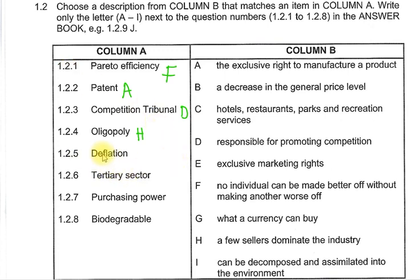Deflation, 1.2.5, is the opposite of inflation. Deflation — the correct answer is B — a decrease in the general price level. So B is the correct answer for 1.2.5.